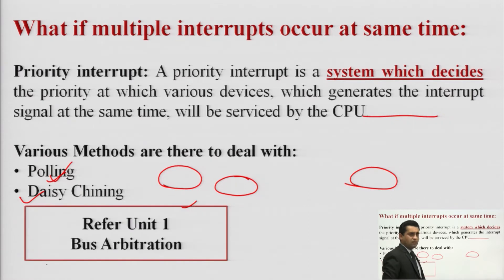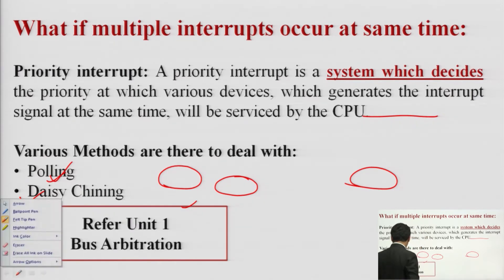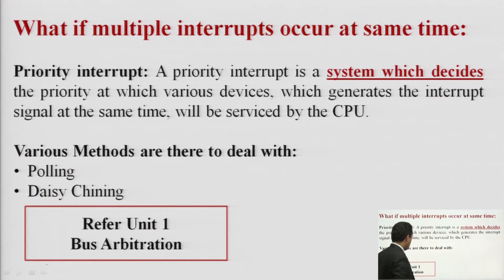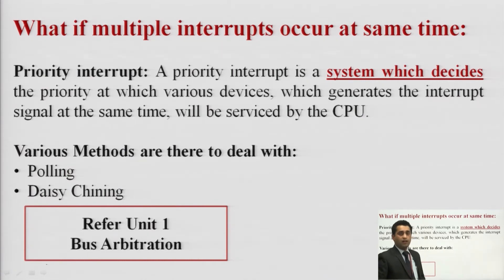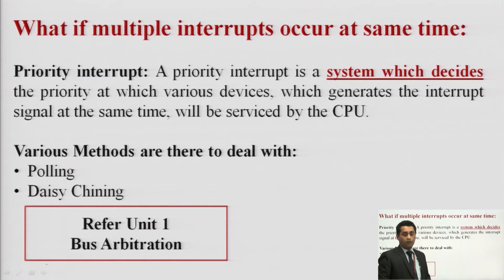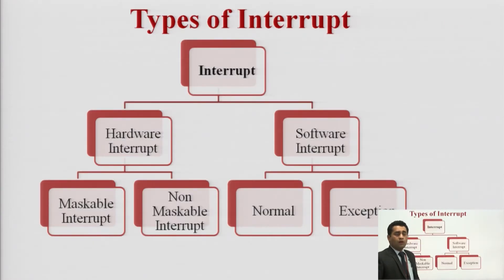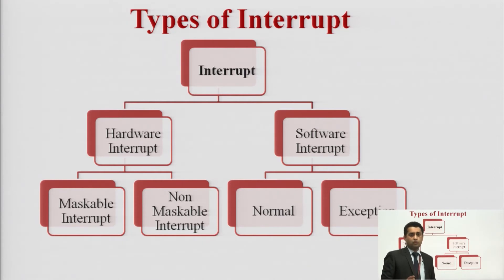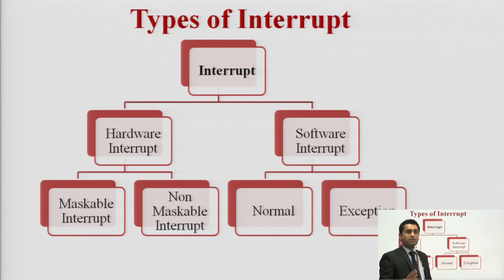This part is already covered in unit number one — refer to it for better understanding. Moving to the types of interrupts, which is an important part: in the CPU we have two categories — hardware interrupt and software interrupt. Hardware interrupts are of two types: maskable and non-maskable.